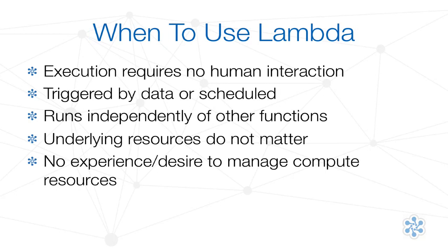Lambda is not designed for all workloads — some are better suited than others. Code that does not require human interaction is a prime example, though it can be used as part of a larger system, as we will demonstrate in lesson 3 with our sample application. Functions should be independent of other functions, meaning we don't want to have one sitting around waiting for others to complete, as that will waste execution time and most likely exceed mandatory timeout settings. Our functions cannot be dependent on underlying physical resources, and we cannot rely on state between executions unless we are storing that state with other services such as DynamoDB or S3. Lambda also makes sense when we have no desire to manage compute resources.